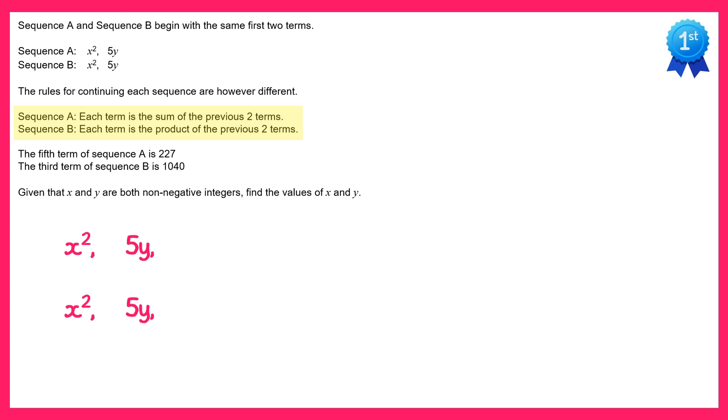We're also told that the fifth term of the first sequence is 227 and the third term of the second sequence is 1040. So it makes sense for us to find an expression for the fifth term of the first sequence and the third term of the second sequence.